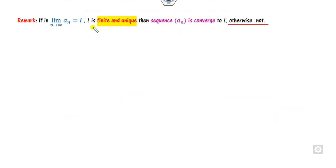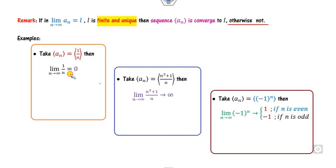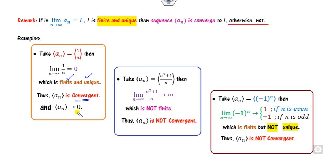Whenever the limit exists and is finite, we say the sequence converges to l; otherwise not. For example, here you have to check whether these sequences are convergent or not. You find the limit of a_n as n approaches infinity in each case. The first limit goes to 0, the second goes to infinity, and the third is plus 1 or minus 1 depending on whether n is even or odd. The value 0 is finite and unique, so the first is convergent. Infinity is not finite, so the second is not convergent. The third has finite limits but they are not unique, so it is not convergent.